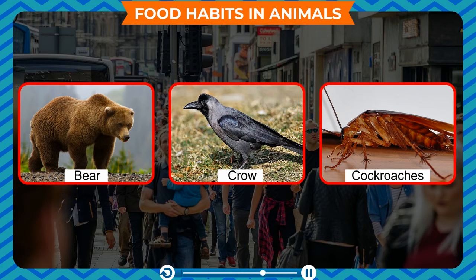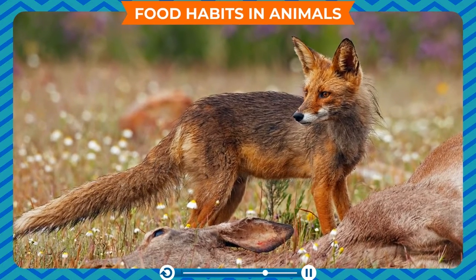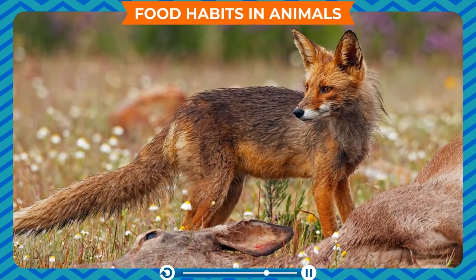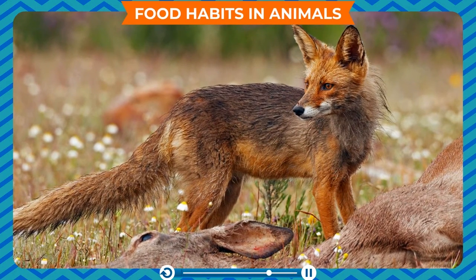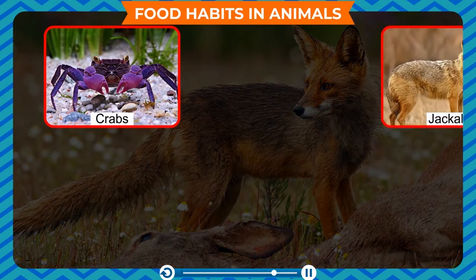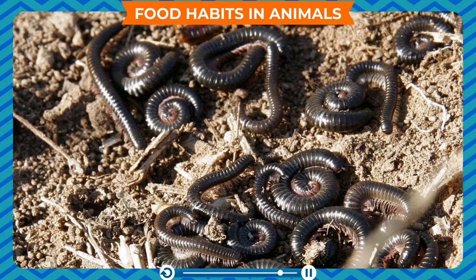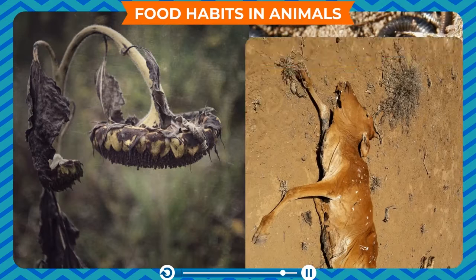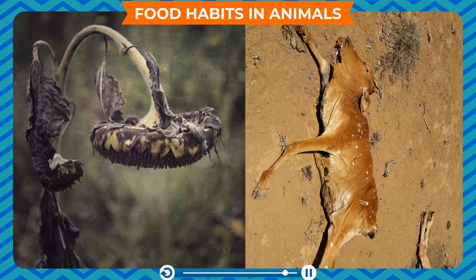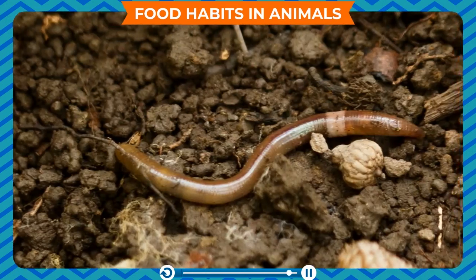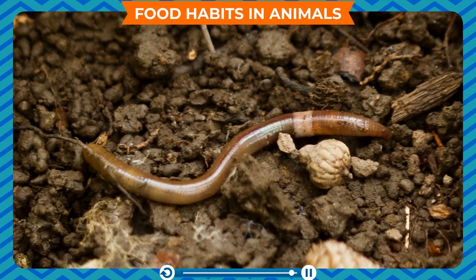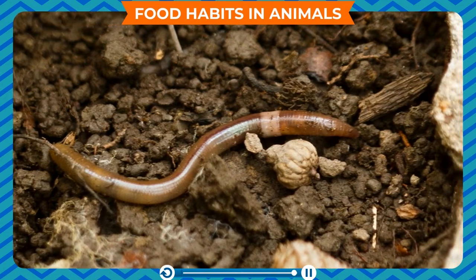Some carnivores and omnivores are known as scavengers — they mainly consume dead bodies of animals and help to keep the surroundings clean. Examples are crabs, jackals, hyenas, and vultures. Some bacteria and fungi break down dead and decaying plants and animals; they are called decomposers. They feed on dead animals and plants present in their habitats.